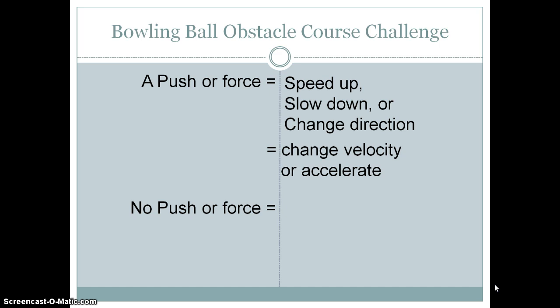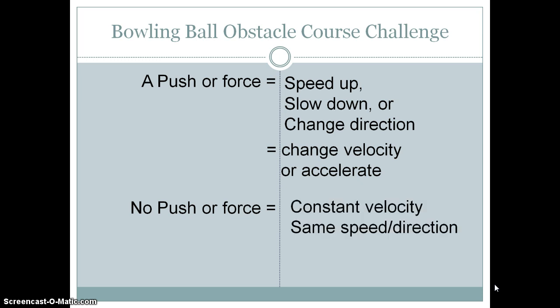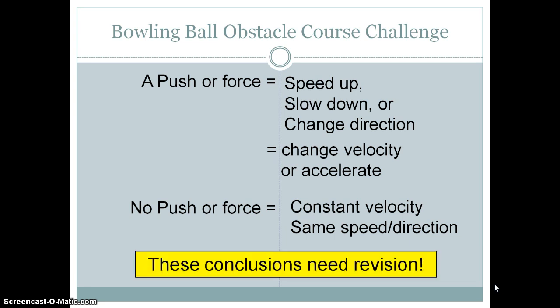We said that when the bowling ball is moving and we weren't pushing on it — no force applied by the broom — the bowling ball moved with an approximate constant velocity: same speed without slowing down or speeding up significantly, and it moved in a straight line. Now we need to go back and revise these conclusions, because even when we weren't pushing on it, that doesn't mean the ball wasn't feeling a push or a pull.